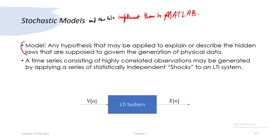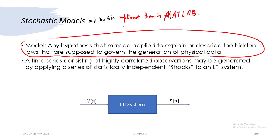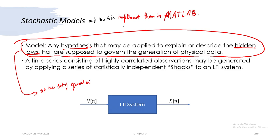We will start with the formal definition of the word 'model.' A model is a hypothesis that may be applied to explain or describe the hidden laws that are supposed to govern the generation of physical data. The key word is 'hypothesis' — if it fits, it works. We hypothesize that this is how speech or images might be generated, and the keyword is 'hidden laws' because the laws governing the generation are not known.